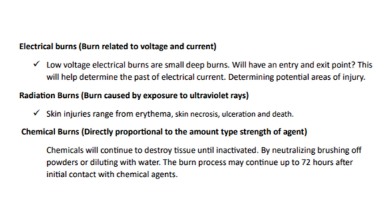Electrical burns normally have a point of entry and a point of exit that you can see. This helps determine the path of where the burn has traveled — you can see the damage throughout the course of where it went. Radiation burns are skin injuries ranging from redness to skin necrosis, ulceration, and even death. With chemical burns, we must be very cautious because they can continue burning for up to 72 hours after initial contact, until they are inactivated — normally by washing them off.